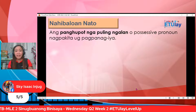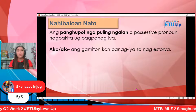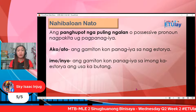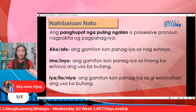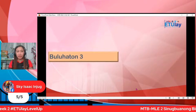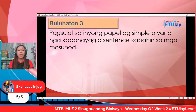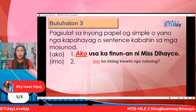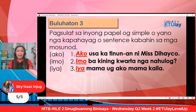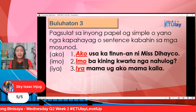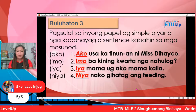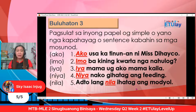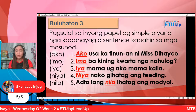Ako, gamitun kong panag-iya nga nag-istorya. Ang imo o inyo, gamitun kong panag-iya sa imong ka-istorya, ang usaka butang. Ang iya, ila, o niya, ang gamitun kong panag-iya sa gatoriyahan, ang usaka butang. Naatay buluhatun — pagsulat sa inyong papel o yanong kapahayag o sentence kabahin sa mga sumusunod: ako, imo, iya, niya, nila. Sige mga bata — maghimo kamo karoon og sentence o pananglitan nga na ay gamit sa ako, imo, iya, niya, at nila.